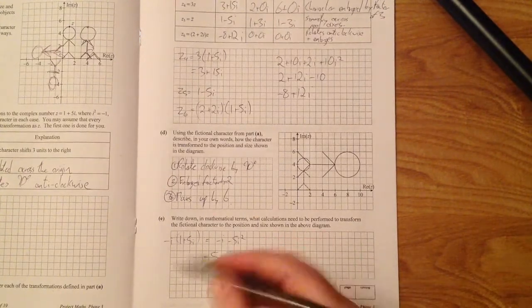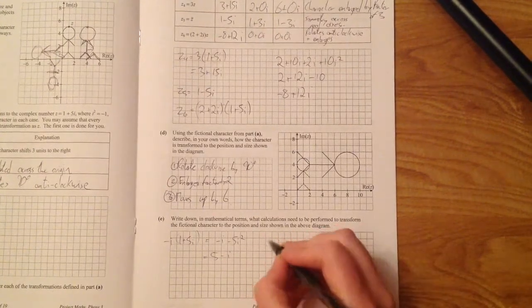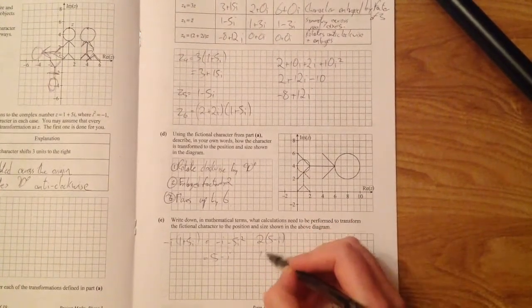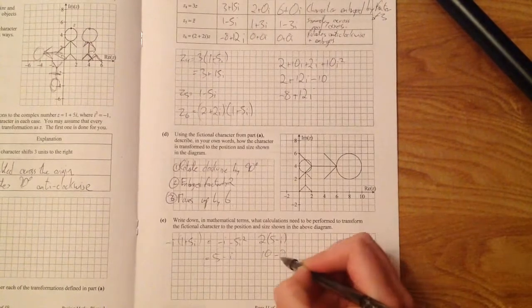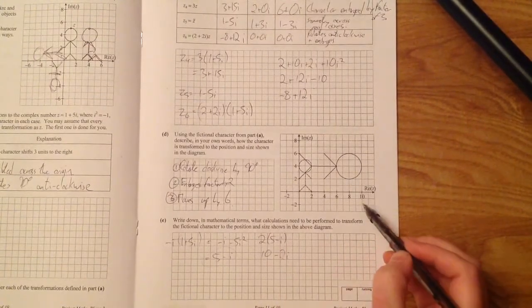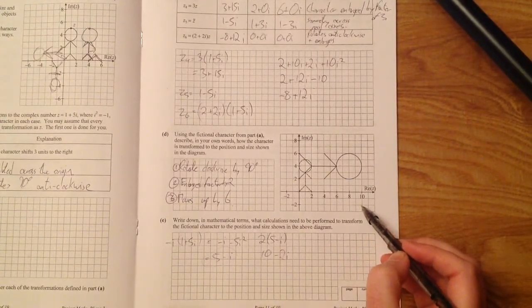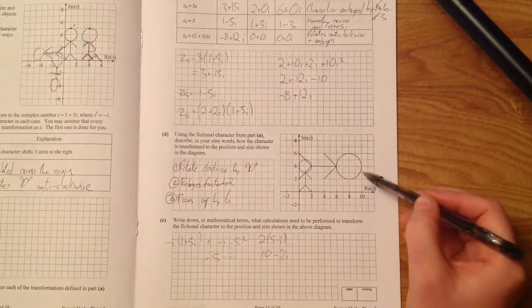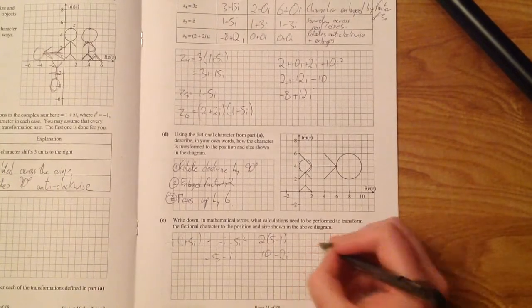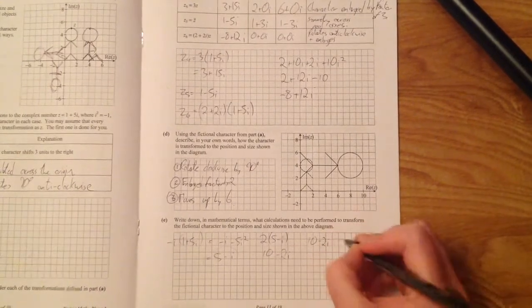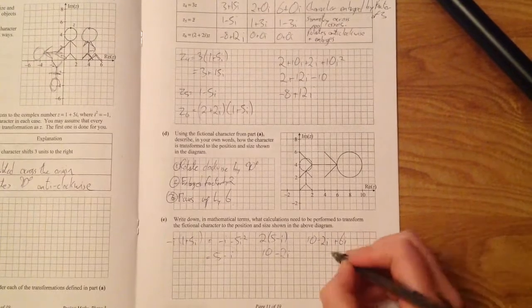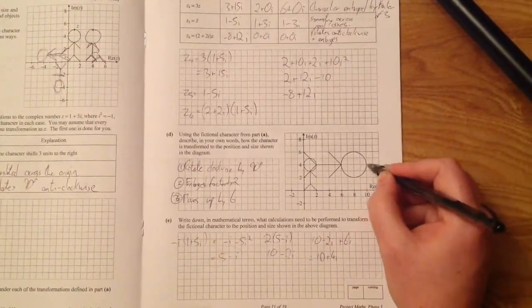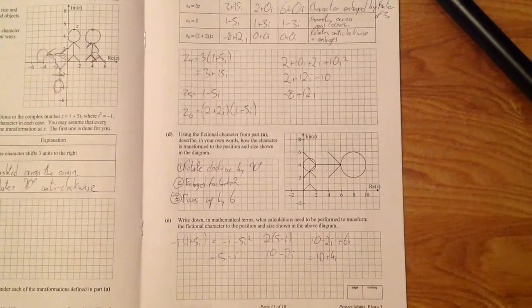And then we need to enlarge by a factor of 2. So that's just multiplying it by 2. So you take this and multiply it by 2. And you get 10 minus 2i. So 10 minus 2i. So now he's down here. And finally then, we need to move him up. We need to get shifted up 6 spaces. 1, 2, 3, 4, 5, 6. So you just add 6i to that. So it's 10 minus 2i plus 6i. And you end up with, that's equal to 10 plus 4i. And there it is, 10 plus 4i. And that was the complex numbers question.